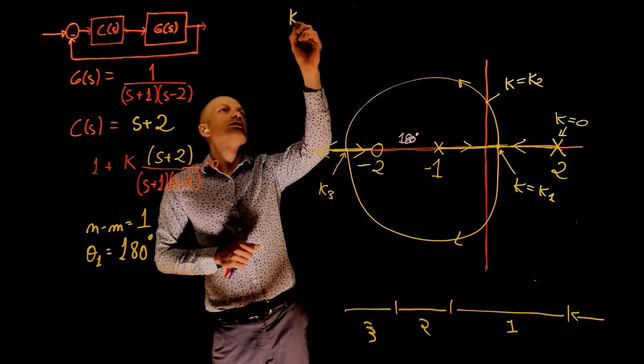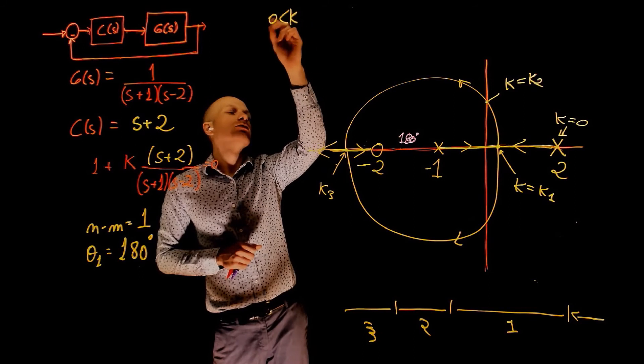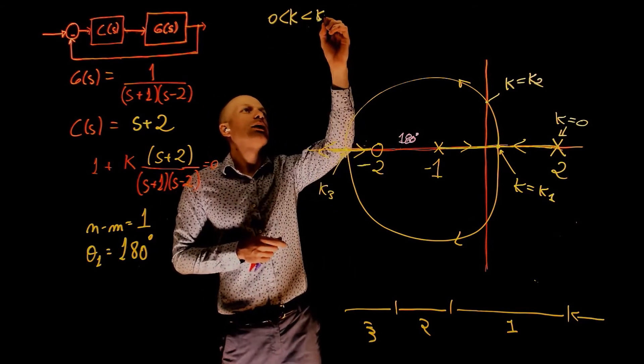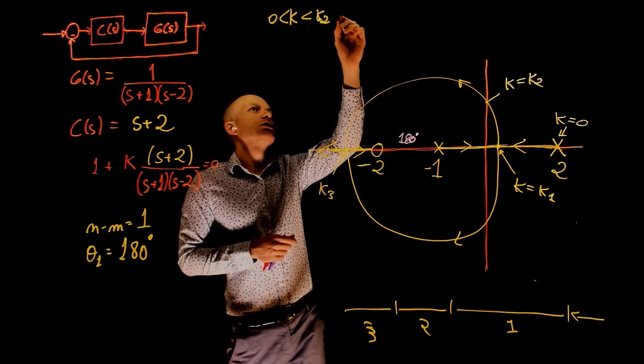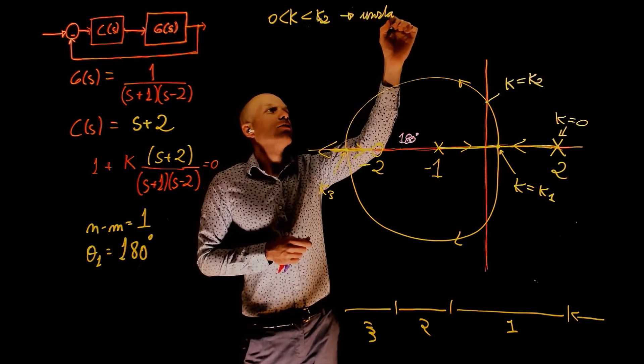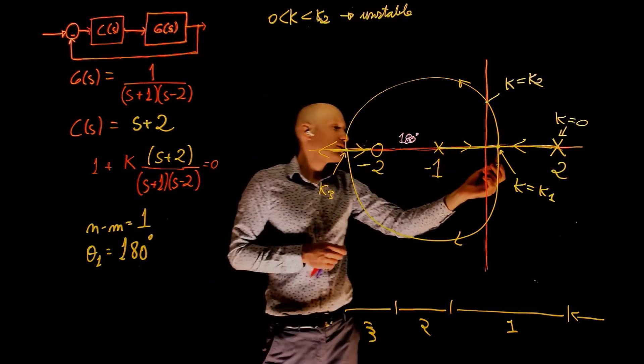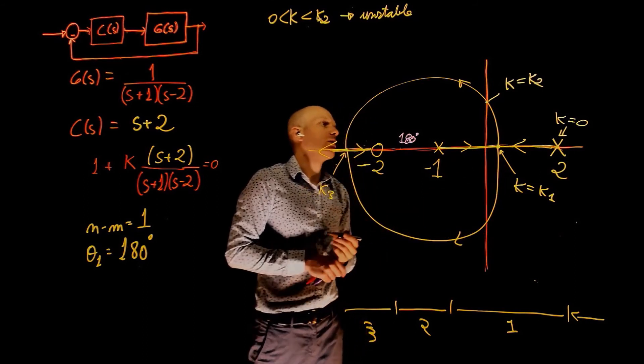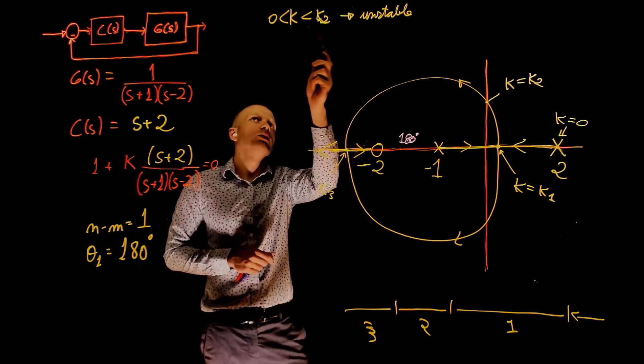So if K is greater than zero and smaller than K2, the system is unstable.